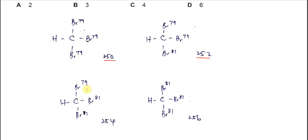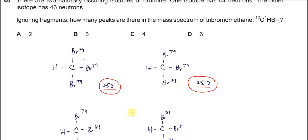Or it can be all bromine-81, which will be 256. Which means you get four different m/z values. So therefore, the answer is C. Okay, that's all, thank you.